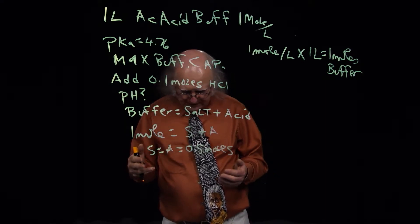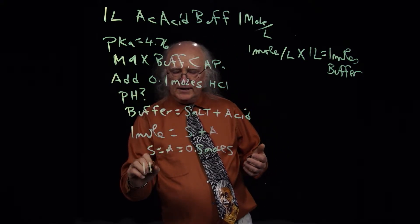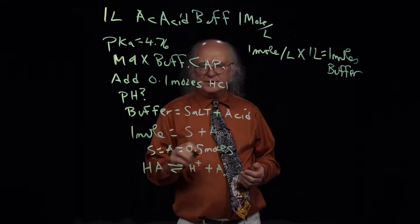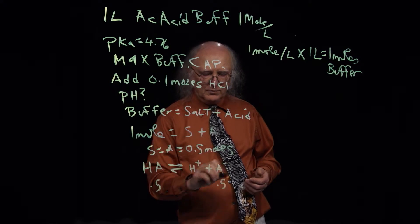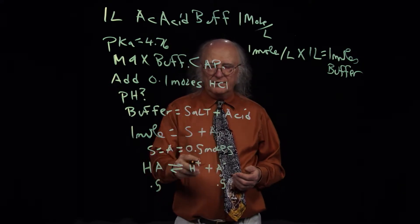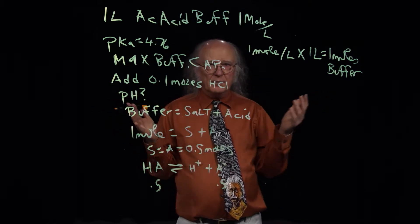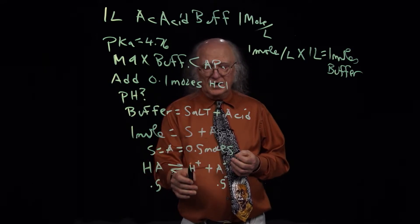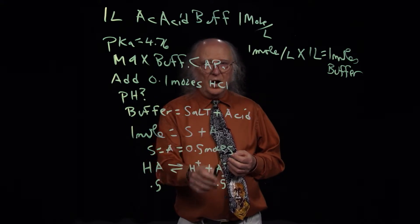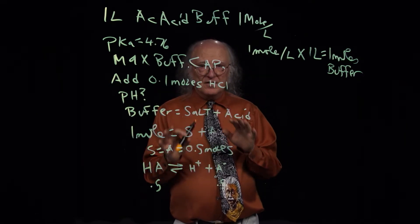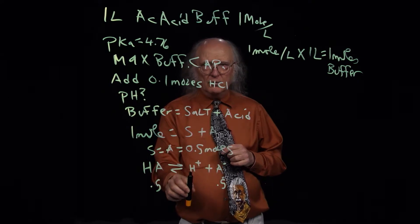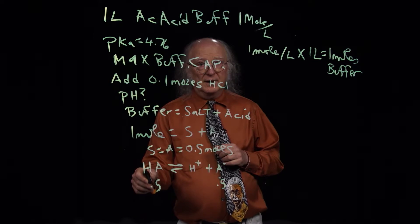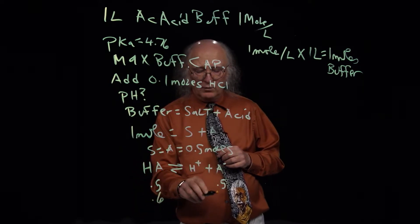If I add 0.1 moles of HCl, remember that HA goes to H⁺ plus A⁻. I'm starting with 0.5 moles of HA and 0.5 moles of A⁻. Adding 0.1 moles of protons — these protons are going to be gobbled up by the A⁻ to resist that change. So A⁻ decreases by 0.1 moles and HA increases by 0.1 moles, giving 0.6 moles of HA and 0.4 moles of A⁻. I still have 1 mole of buffer total.